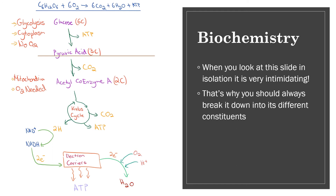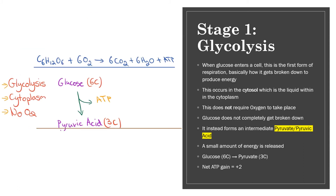This is where it gets really tough — the biochemistry of it all. This brings the theory I've just discussed into the actual process of respiration and how it works. The top line in blue is the equation for aerobic respiration — the full process. Glucose is converted to pyruvic acid in the top part, which represents incomplete or anaerobic respiration. Below that line is what happens in the presence of oxygen, when pyruvic acid passes into the mitochondria. It's very intimidating in isolation, so we should always break it down into its different constituents.